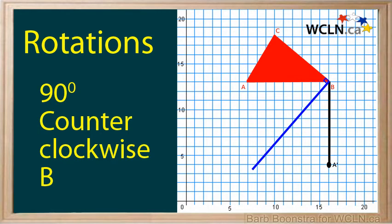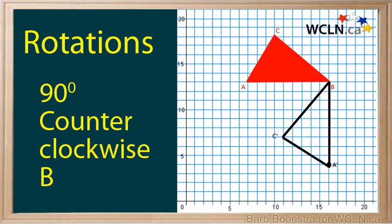To plot point C prime, draw a 90 degree angle at point B from line BC. Make point C prime by measuring the length of BC. You can use a compass or a ruler. Then join C prime and A prime.